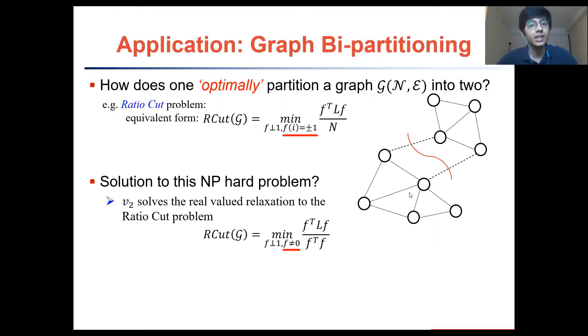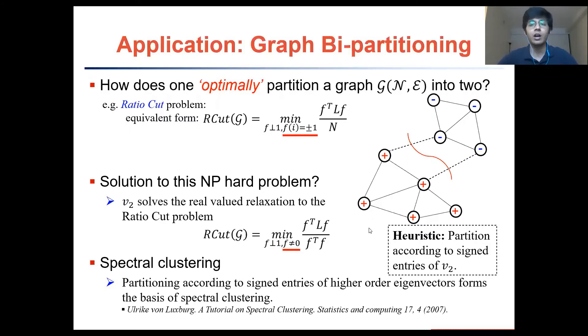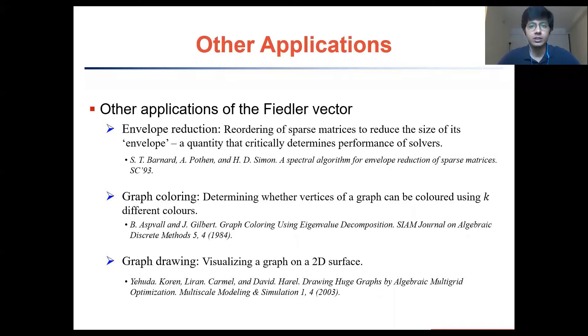Thus, a powerful heuristic to solve the problem is obtained by partitioning the graph according to the signed entries of the Fiedler vector. Partitioning according to signed entries of higher-order eigenvectors actually forms the basis of spectral clustering, which is a well-known method of obtaining k-clusters on a graph. The Fiedler vector also finds applications in problems such as envelope reduction, which is a problem for reordering sparse matrices in order to improve the performance of solvers, and even graph drawing where it is used to help visualize a graph on a two-dimensional surface.